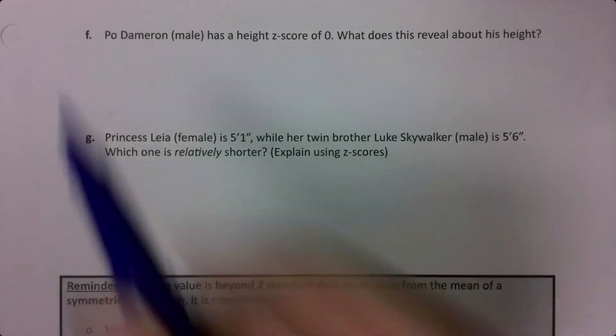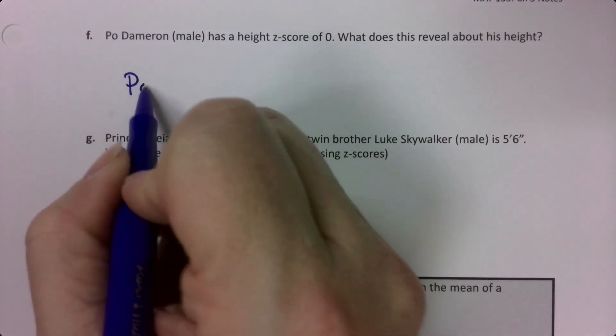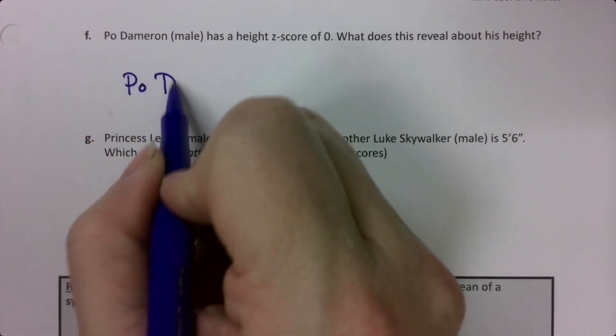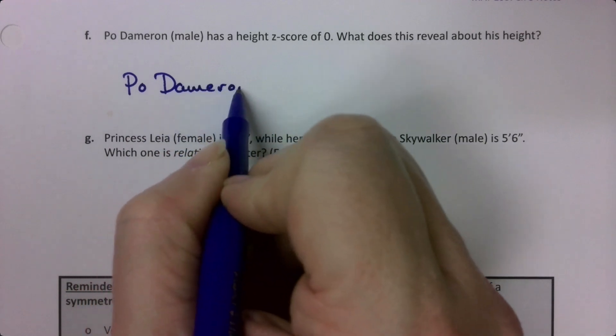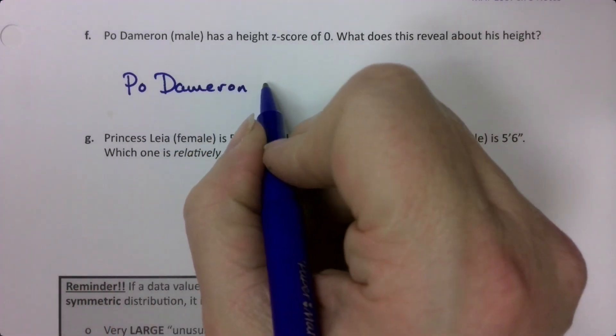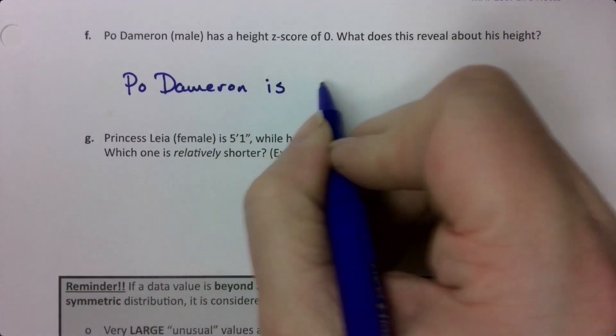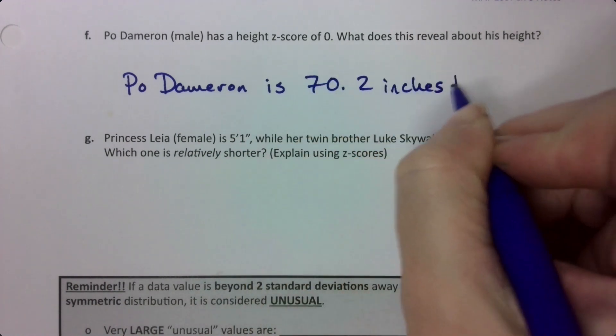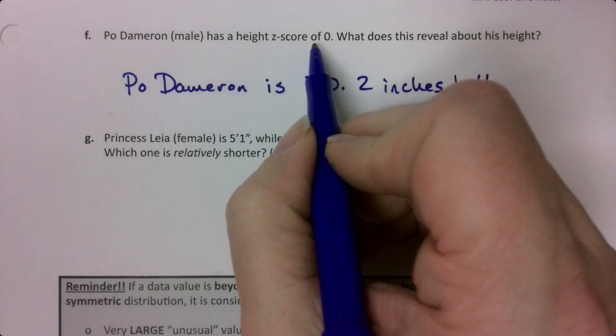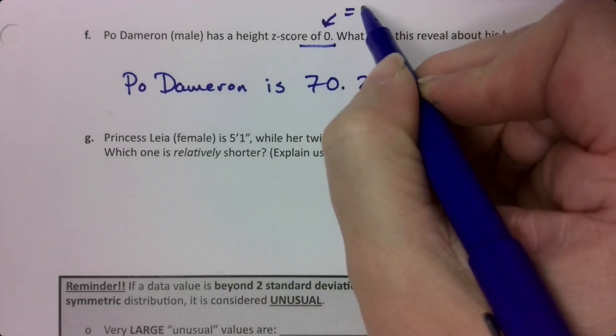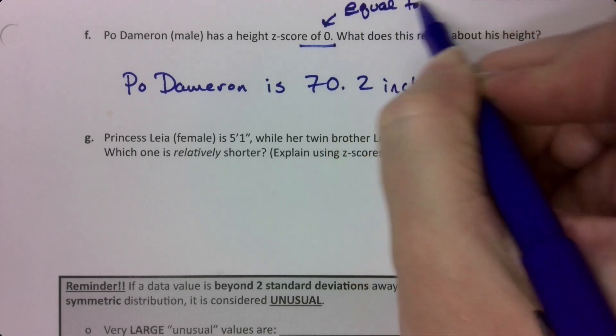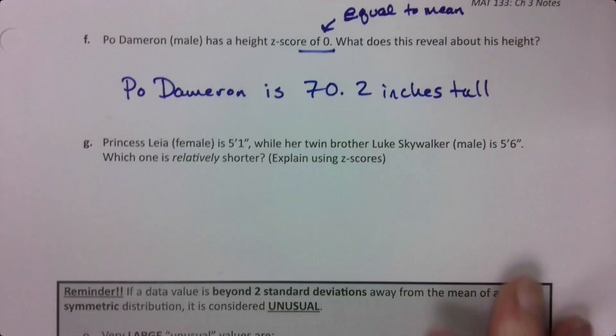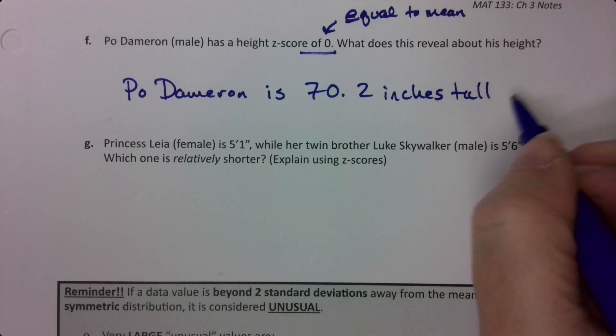Well, if a z-score is zero, it means that your value is equal to the mean. So that means Poe Dameron is equal to the mean for men. I'll write the word equal to the mean.